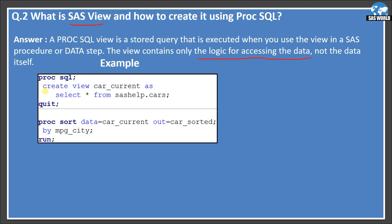Here is an example of creating a view. Creating a view is similar to creating a dataset — we use CREATE VIEW instead of CREATE TABLE. The view name is car_current, and the underlying query is SELECT * FROM sashelp.cars. Anyone accessing the car_current view will trigger this query and receive all observations from sashelp.cars. Now I access this view in PROC SORT, using DATA=car_current, OUT=car_sorted, and sorting by MPG_City. When executed, it reads all observations from sashelp.cars via the view and writes sorted results to car_sorted.